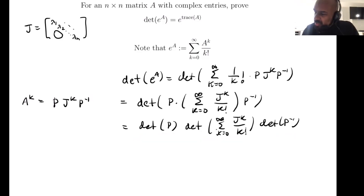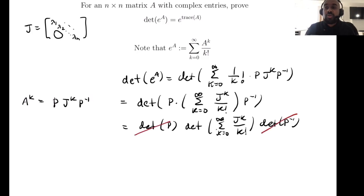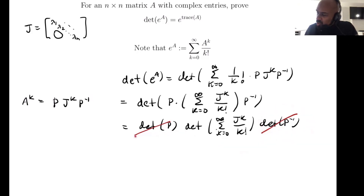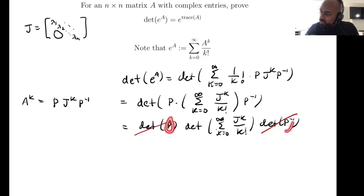It's a standard fact that the product of the determinant of a matrix and its inverse equals one. If you take these two quantities — since they're real numbers — the determinant of P times the determinant of P⁻¹ is the determinant of their product, which is the determinant of the identity, which is one.